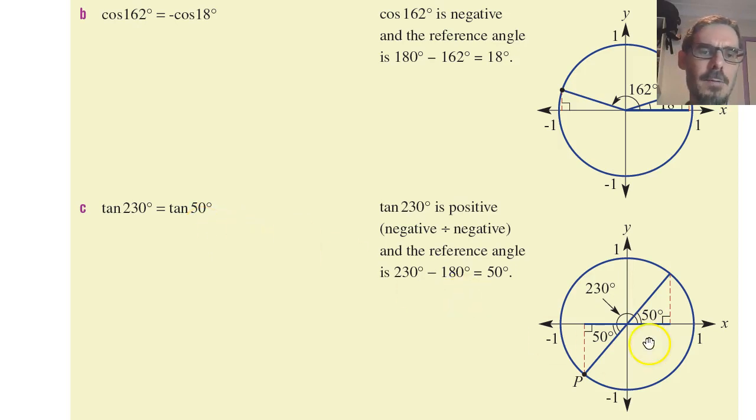Is it positive or negative? Well, in the third quadrant, x and y, sine and cosine, are both negative. And a negative divided by a negative is positive. So tan is positive. So tan 230 is equal to positive tan 50.